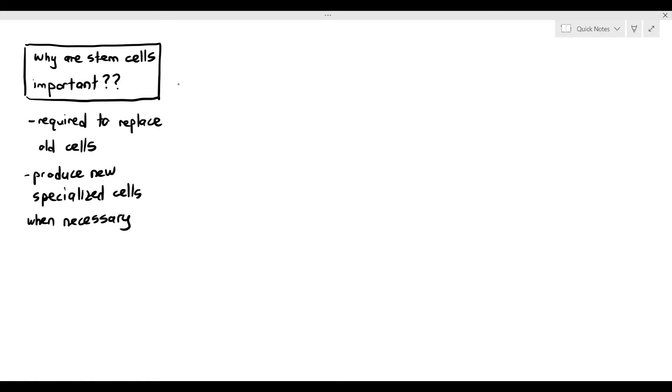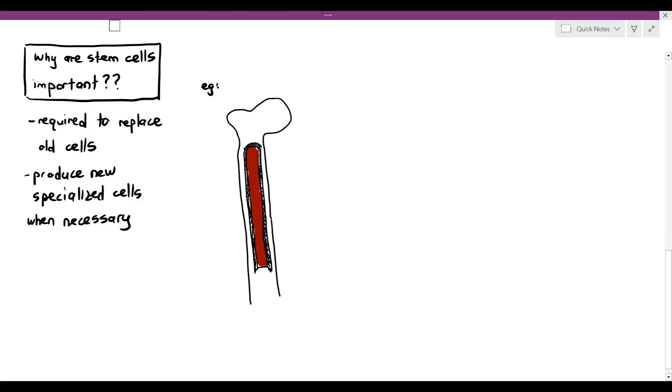Now, why are stem cells important then? Very simple. Stem cells are important in your body because they are required to rebuild all cells, and they produce new specialized cells when necessary. Let's look at the inside of our bone. The inside of our bone over here is referred to something called the bone marrow. Now, inside the bone marrow, by the way, the bone marrow itself is quite reddish, and the reason for that is because it is full of the cells known as blood stem cells.